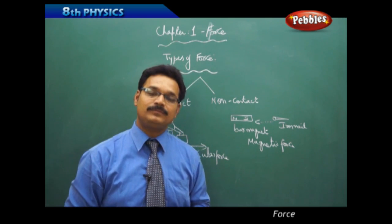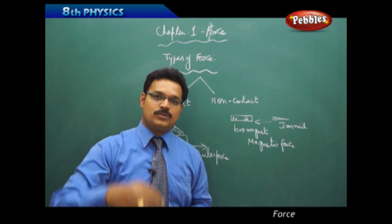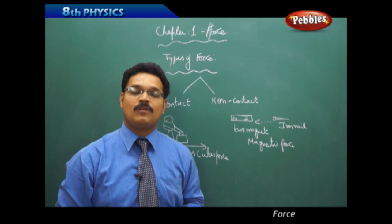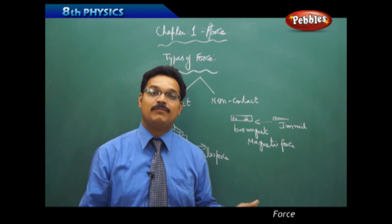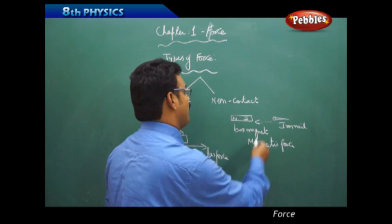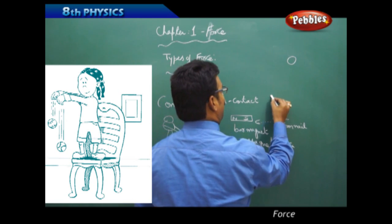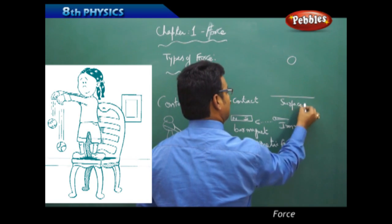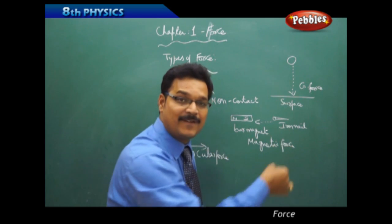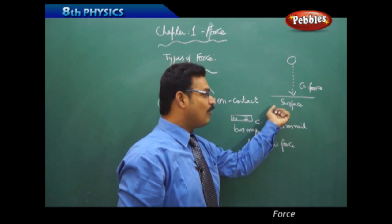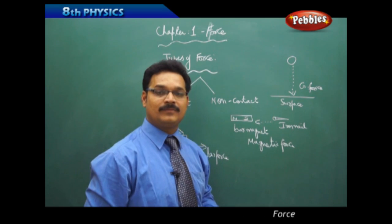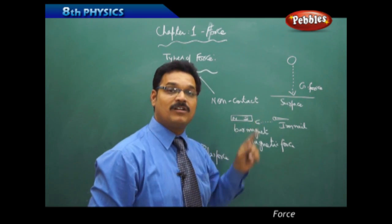Now I will give another example to you. You know that when you drop any object, then what happens? It falls on the ground. Why is it falling on the ground? Everyone knows that because of gravitational force of the earth. Here also when the body like a ball is falling on the surface, it is falling on the surface because of gravitational force. And this gravitational force is attracting the ball towards the surface. And this surface and the ball are not in contact. So gravitational force is also a non-contact force.